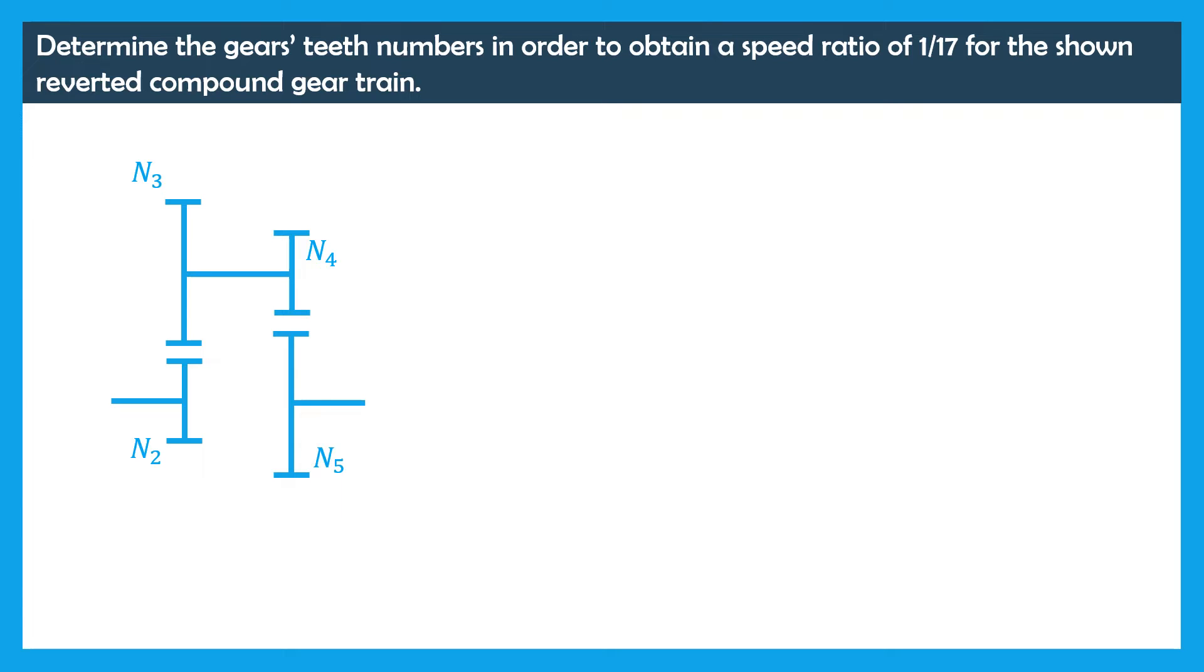First, the speed ratio of this reverted compound gear train writes N2N4 divided by N3N5.